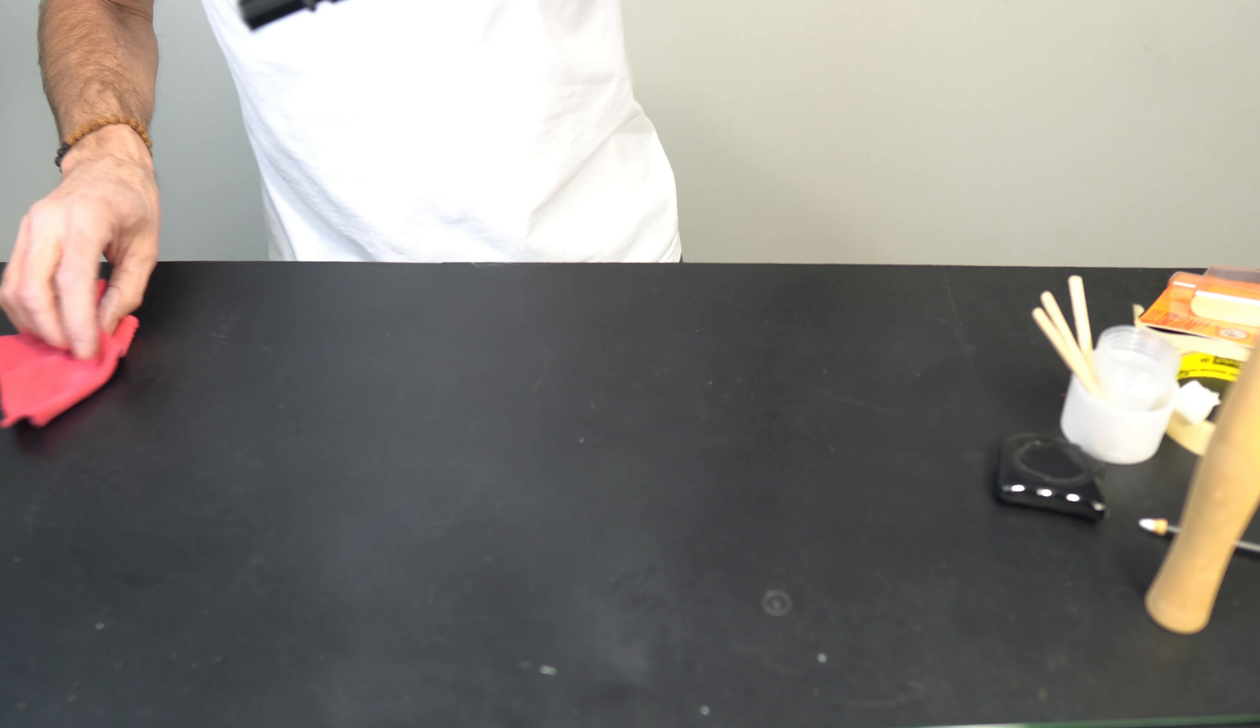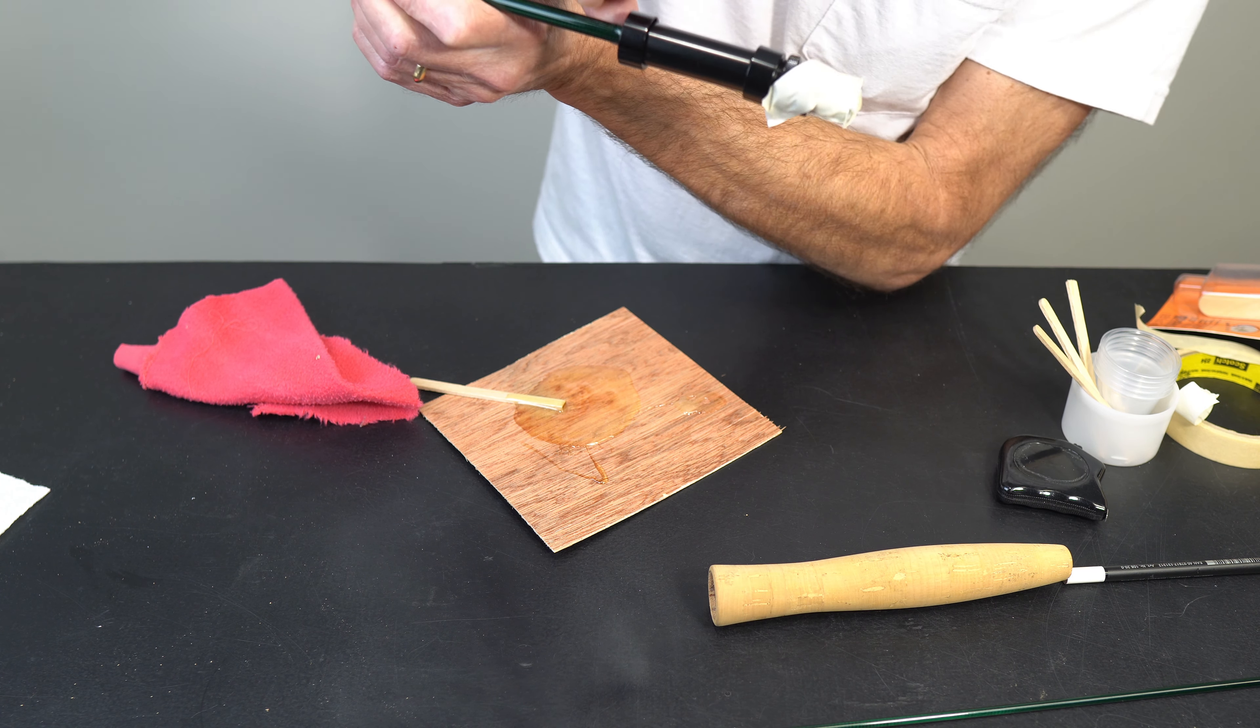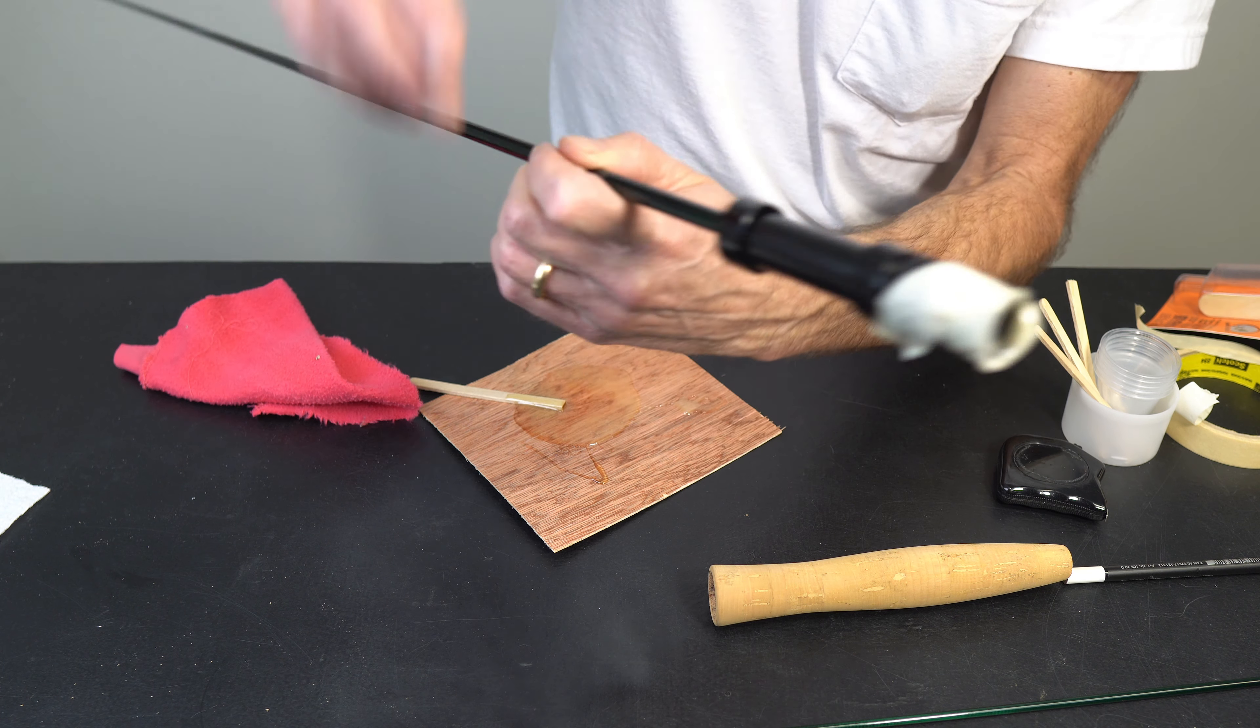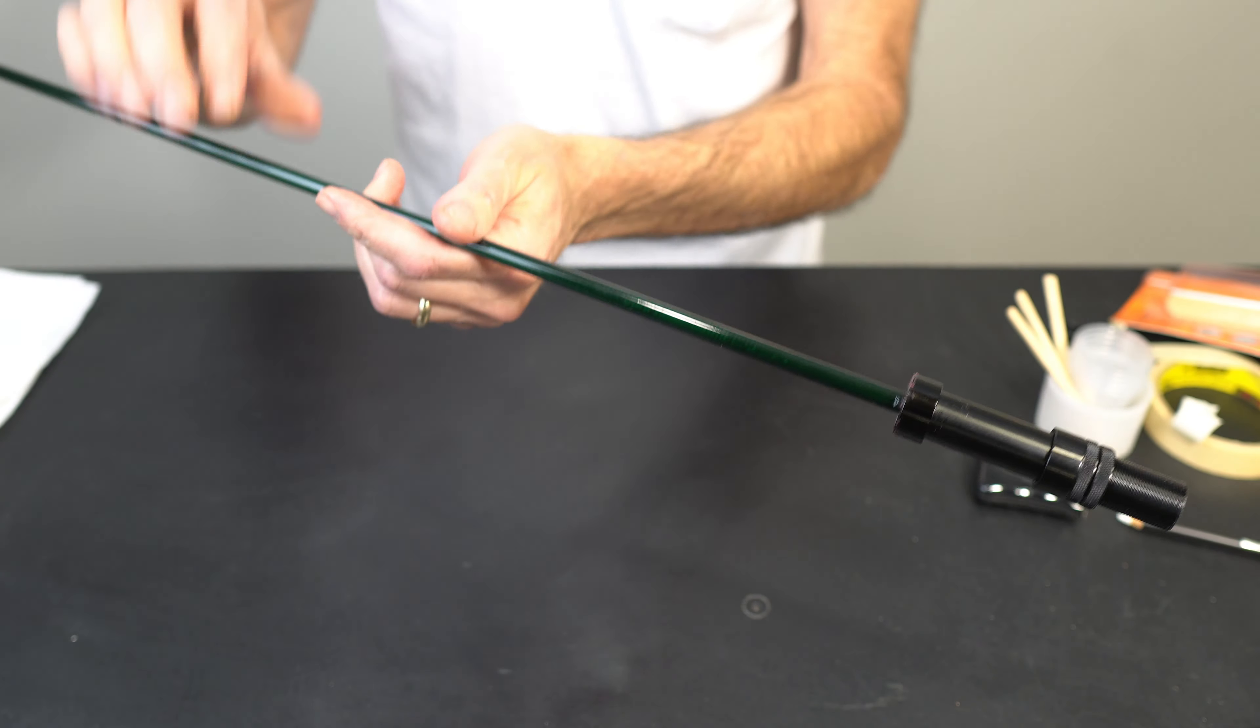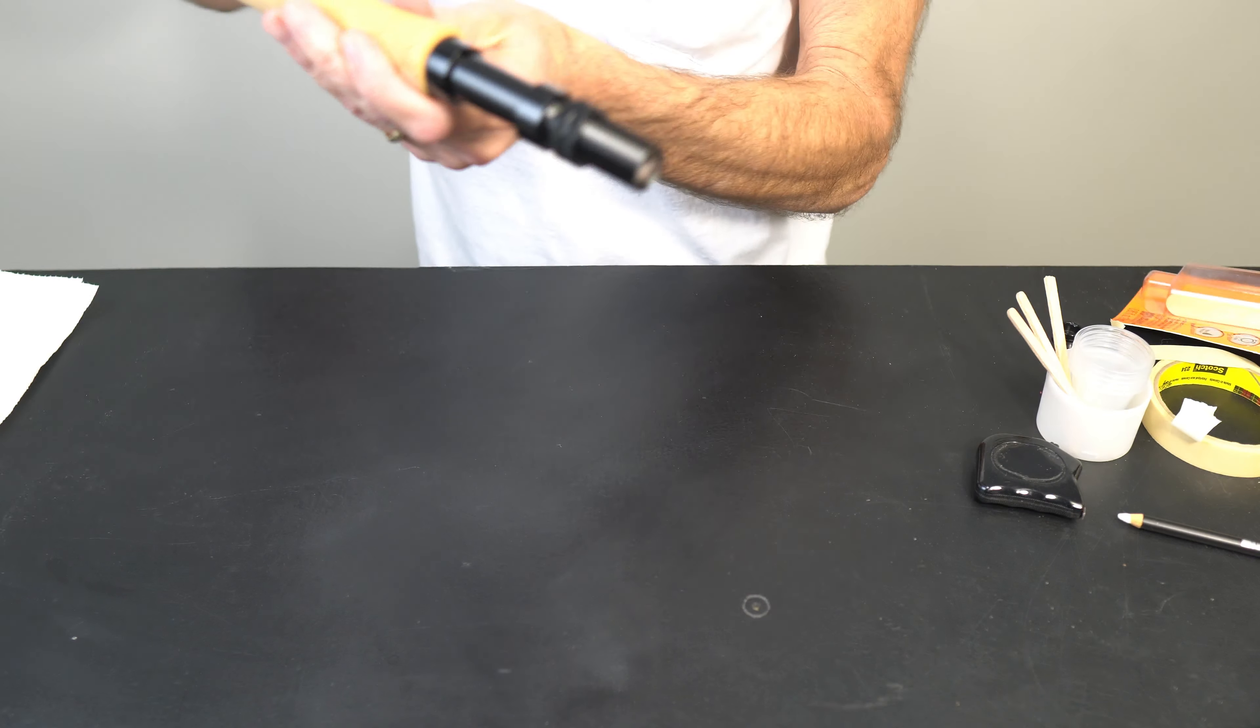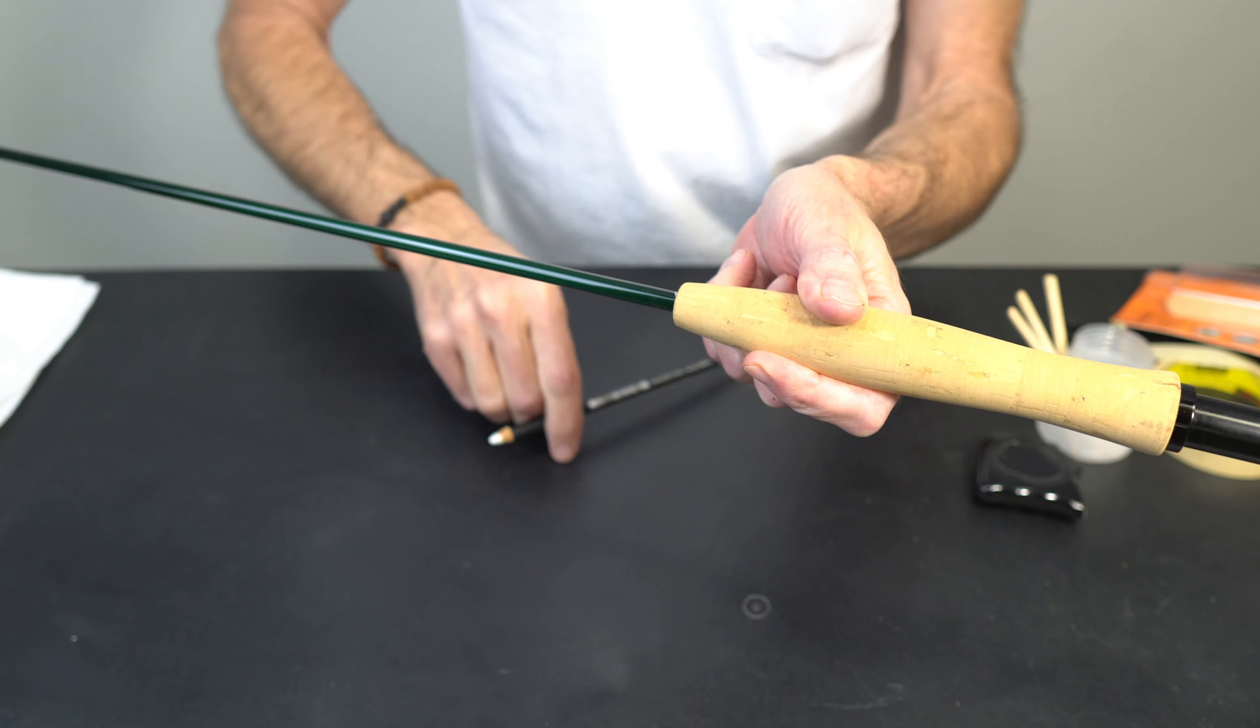Now is the time to wipe it up with that acetone that I mentioned. Remember we've got our marking on the blank itself. I'm going to need my hood opening, this little opening in here, to align with my marking. Our reel seat is all set up.